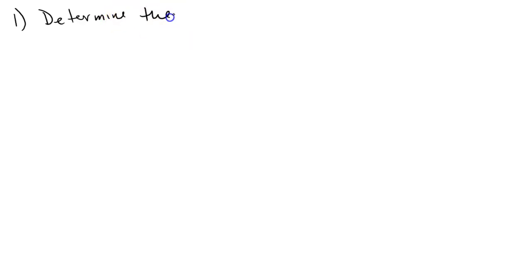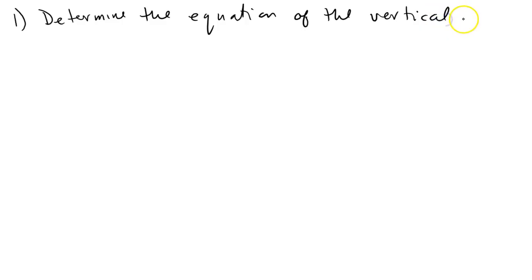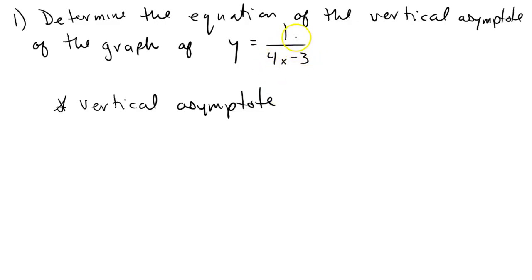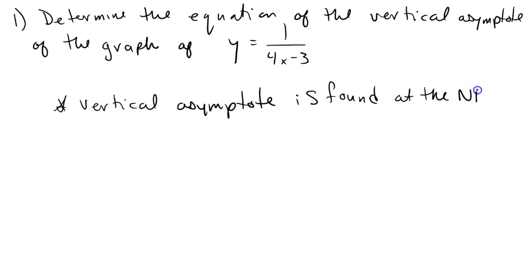Example 1. Determine the equation of the vertical asymptote of the graph of y equals 1 over 4x minus 1. The solution: remember the vertical asymptote in linear functions is found at the non-permissible values. So, 4x minus 3 equals 0 — that would be the non-permissible value for this rational function.